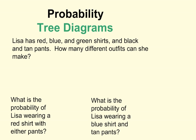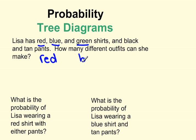Let's look at another example. Lisa has red, blue, and green shirts, and black and tan pants. How many different outfits can she make? At the very top of our tree we'll put her shirts — red, blue, and green.